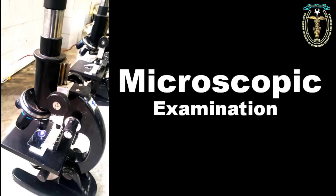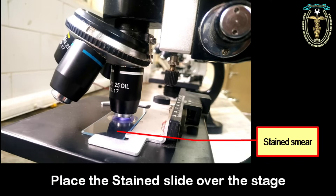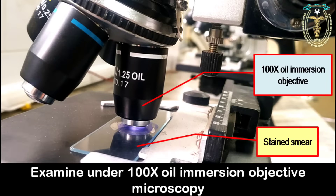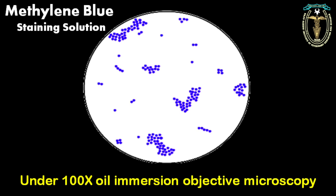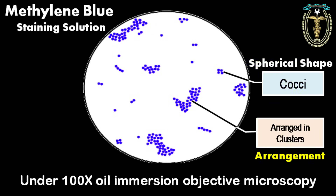The microscopic examination: place the stained slide over the stage and examine the slide under 100x oil immersion objective microscopy. On microscopic examination, since we have used methylene blue staining solution, the microorganism stains blue. Here the organisms are spherical shaped, so they are cocci, arranged in clusters.